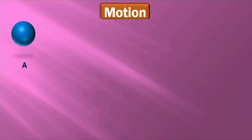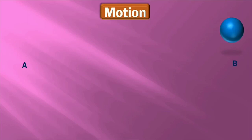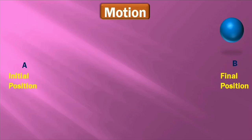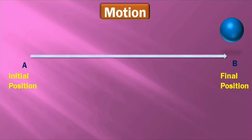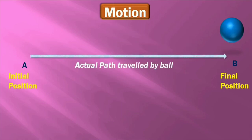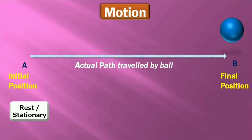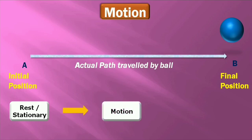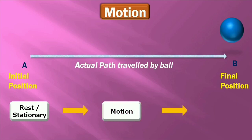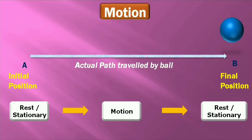Let's take one example. This is position A where the ball is kept, and now the ball is moved from position A to the next position B. So A is the initial position of the ball and B is the final position. The position of the ball has changed from initial position A to final position B. This is the actual path traveled by the ball from A to B. The ball is initially at rest, then in motion from A to B, and again at rest at B.